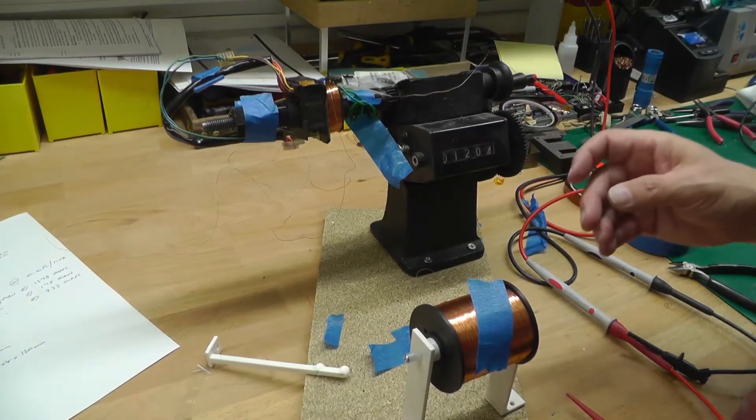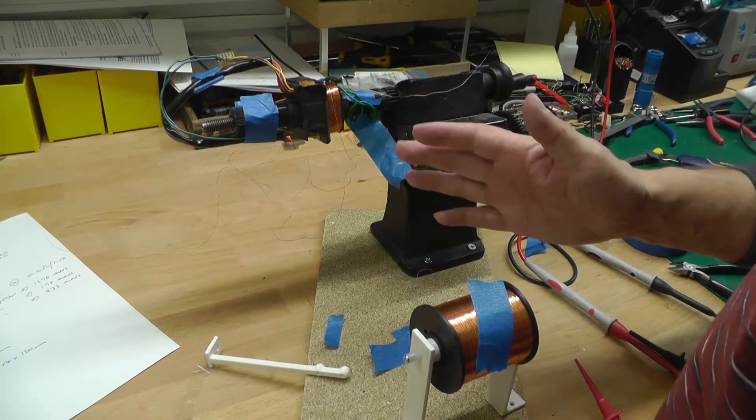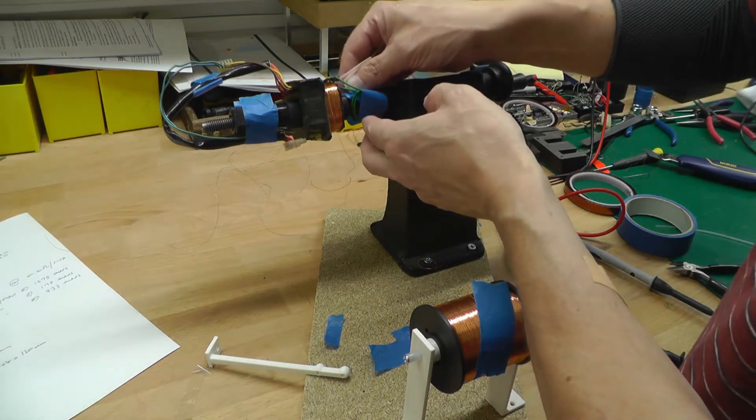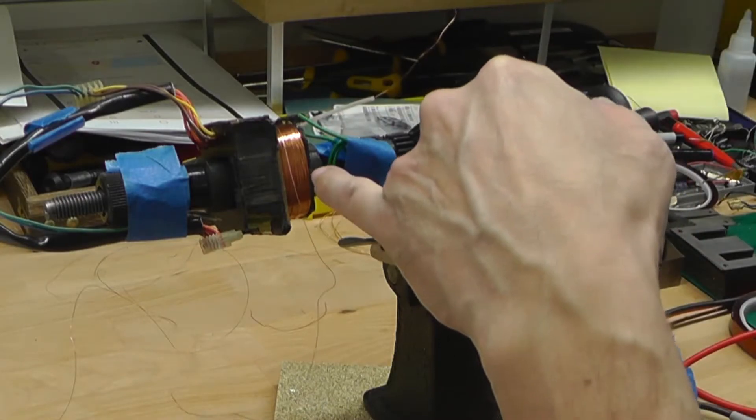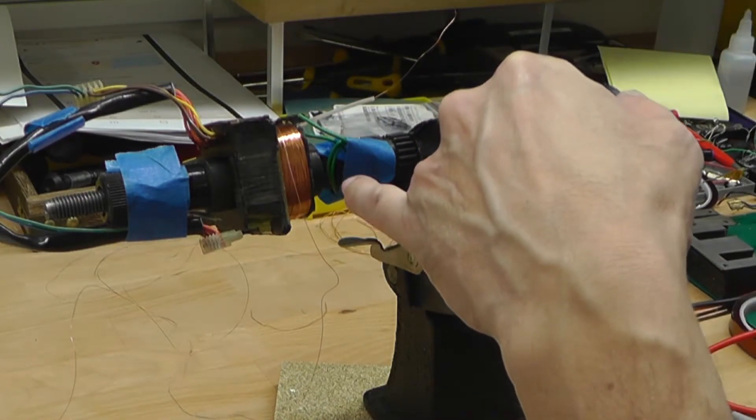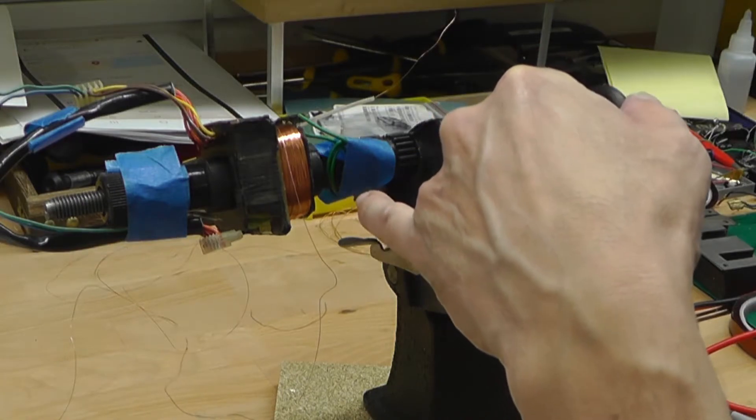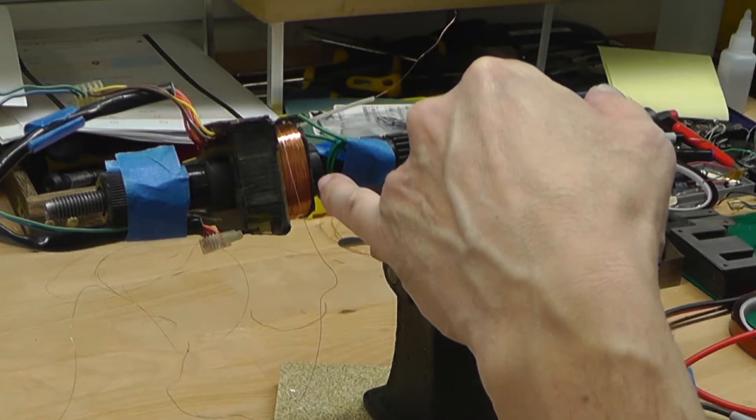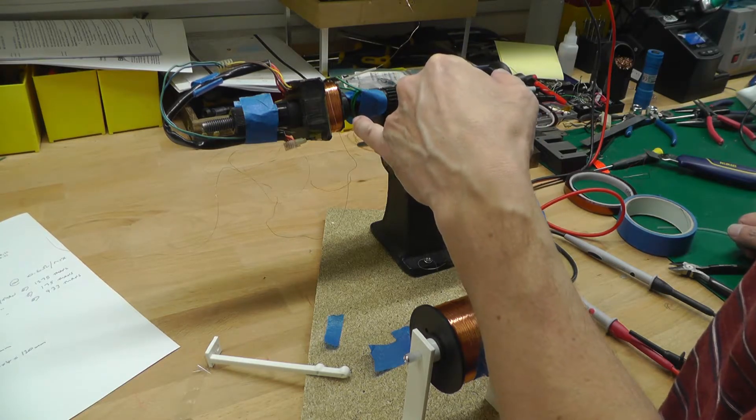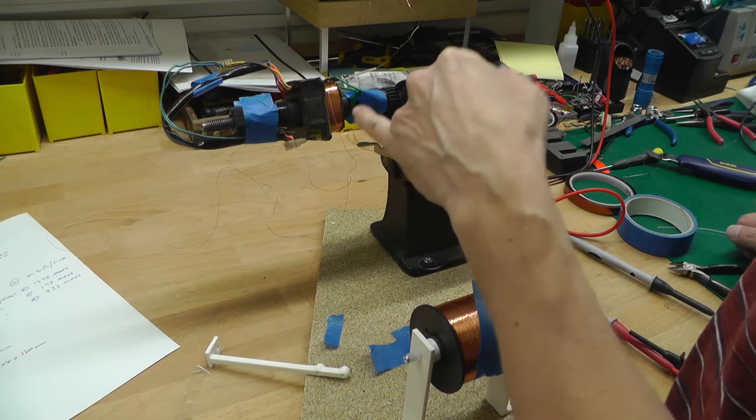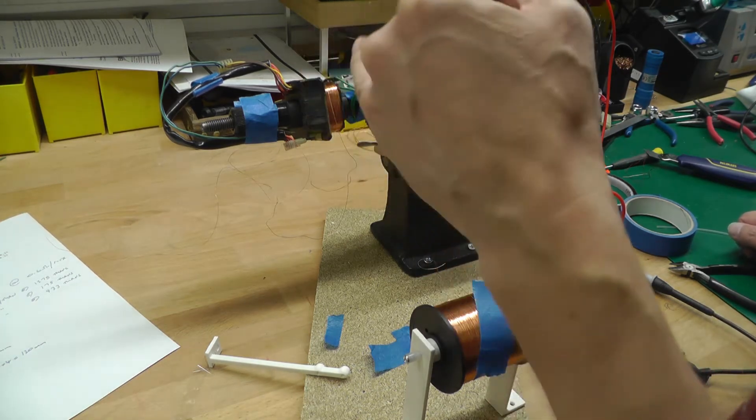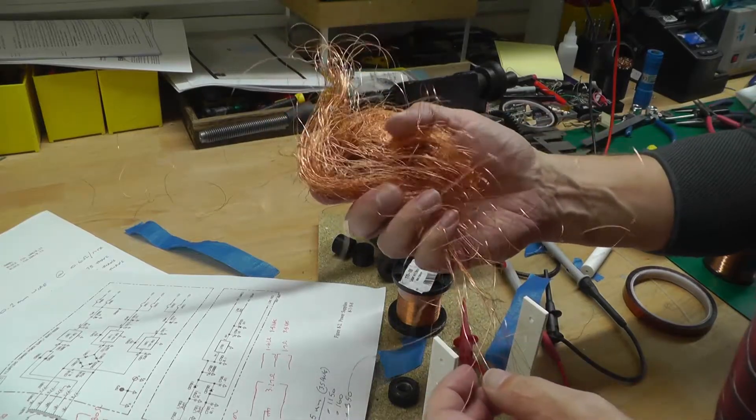Well I've wound on 1200 turns and to tell you the truth it looks a lot. It is filled up that side of the bobbin quite significantly. I mean if I just had another few hundred turns to go it wouldn't be a problem, but I've got another 900 over a thousand turns to go and there's no way they're going to all fit on. So I've made a mistake somewhere in my calculations.